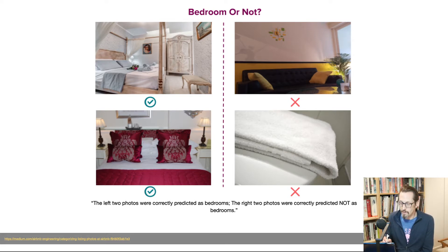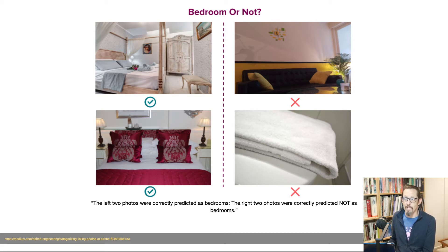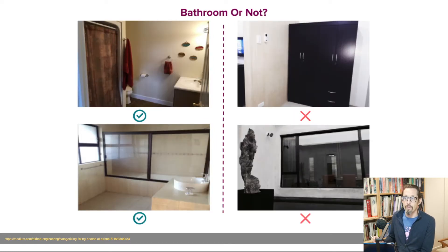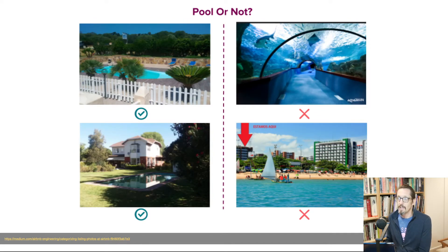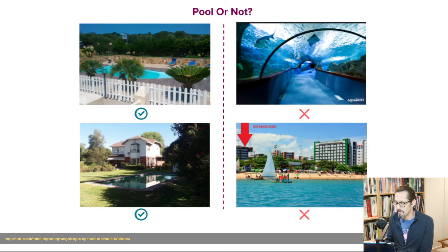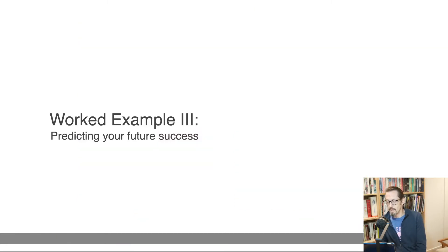We do pretty well overall with ResNet-50 on classifying bedrooms or living rooms. The left two photos here were correctly predicted as bedrooms; the right two were correctly predicted as not bedrooms. And these are correctly identified as not swimming pools — which is a pretty good job given the visual similarities.